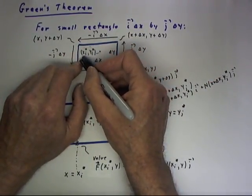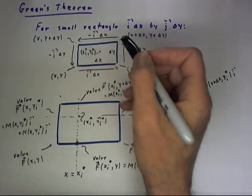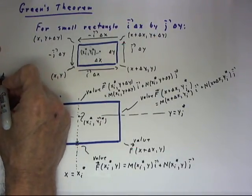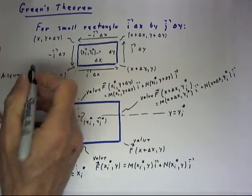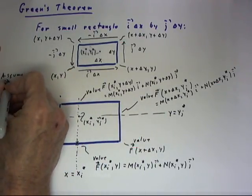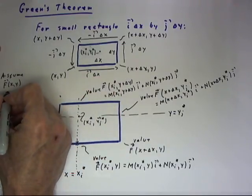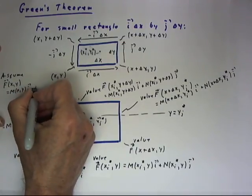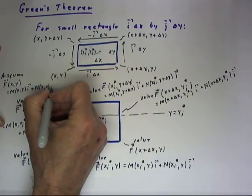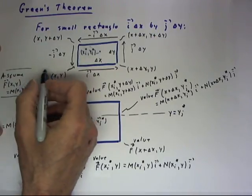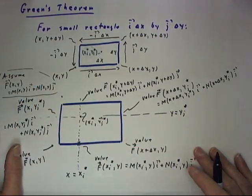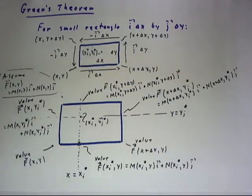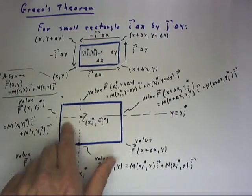We're going to assume a sample point X I star, Y J star within the rectangle. So now let's assume that a vector function F of X, Y equal to M of X, Y, I plus N of X, Y, J, is defined within the region of this rectangle. And what can we determine about the behavior of this function on this rectangle?